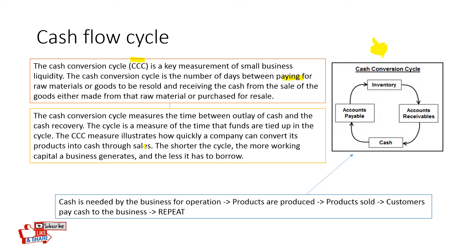The CCC illustrates how quickly a company can convert its products into cash through sales. The shorter the cycle, the more working capital a business generates and the less it has to borrow — because if you're making something quickly and selling it quickly, you're making profit and repeating that process. Cash is needed by the business for operation; products are produced; products are sold; customers pay cash to the business — and this is repeated. This is what the cash flow cycle is.